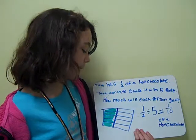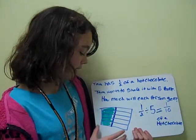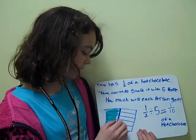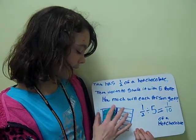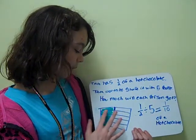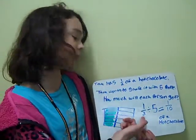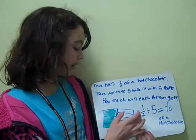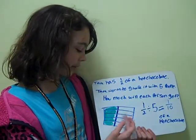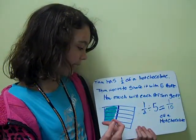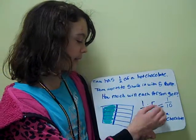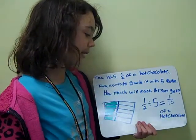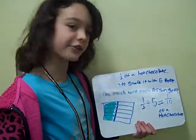They would get one tenth because you draw your box, you cut it in half, and you color one half of it, and that would be the one half. Then you go across it with five lines, and that would be your five. And then you do your equal side, and you do one tenth of a hot chocolate.